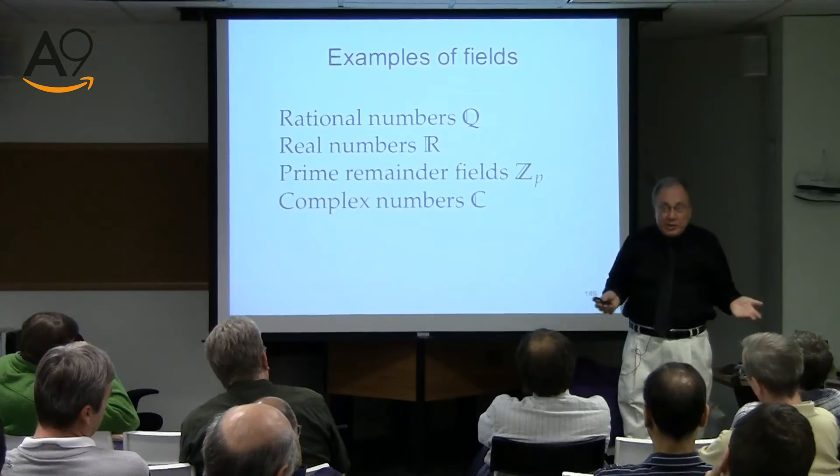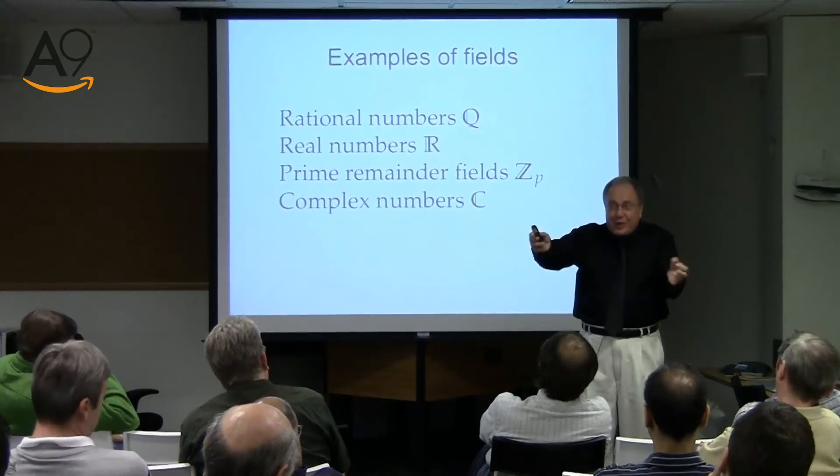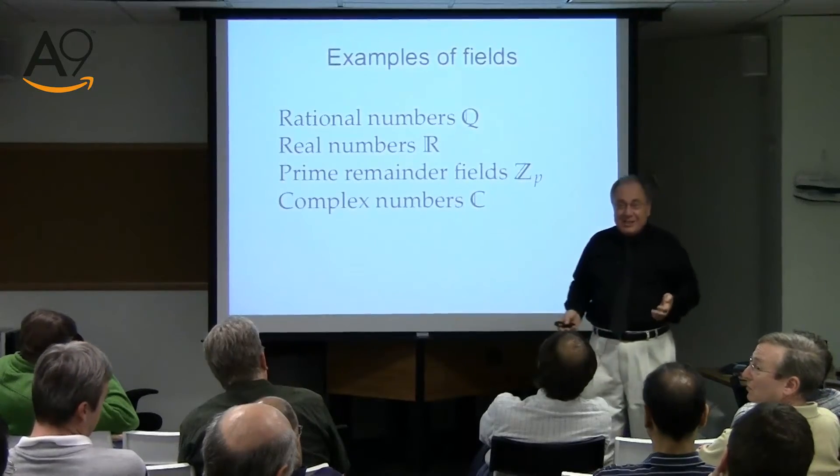Consider ℤ_2: a perfectly nice Galois field with two elements, 0 and 1, where 1+1=0. In the rational numbers, 1+1 is not 0. So ℤ_2 is not a subfield of ℚ — to be a subfield you have to obey the same addition and multiplication tables, not just share the same glyphs.